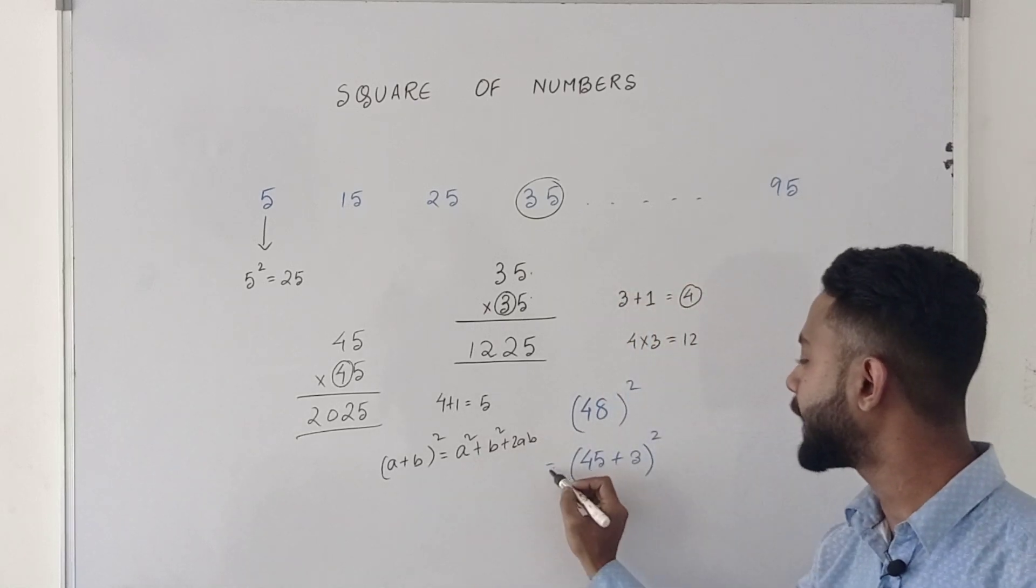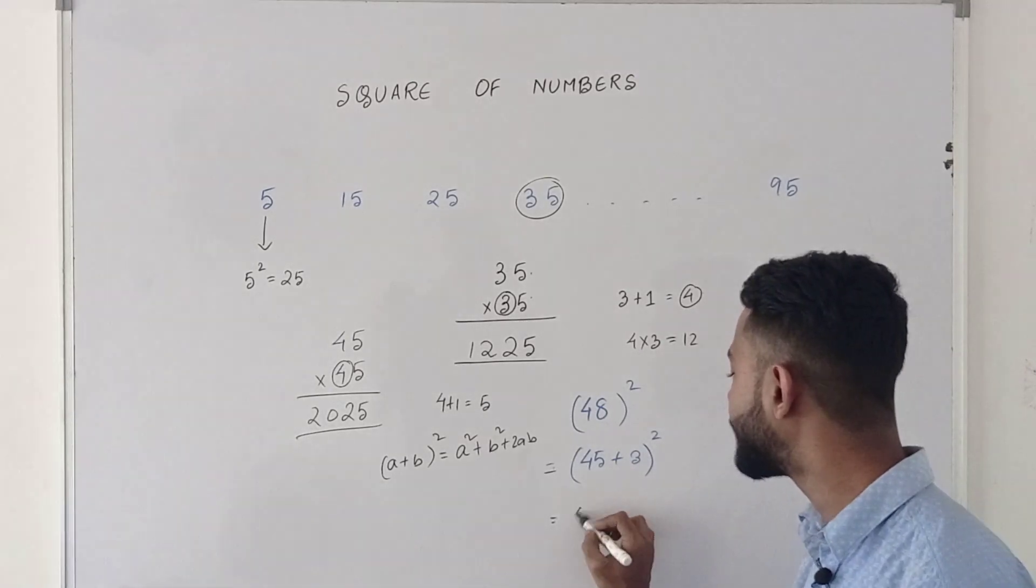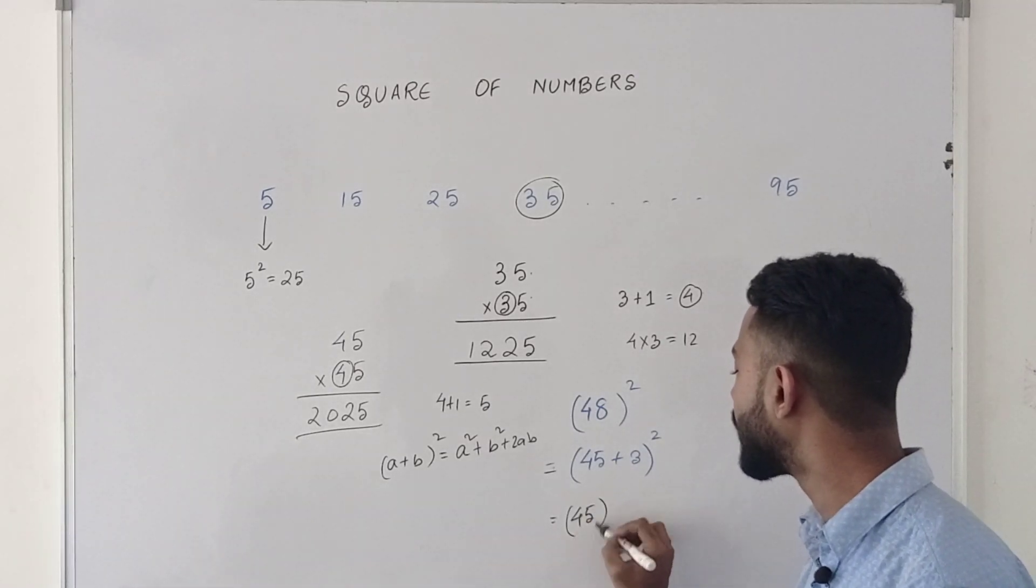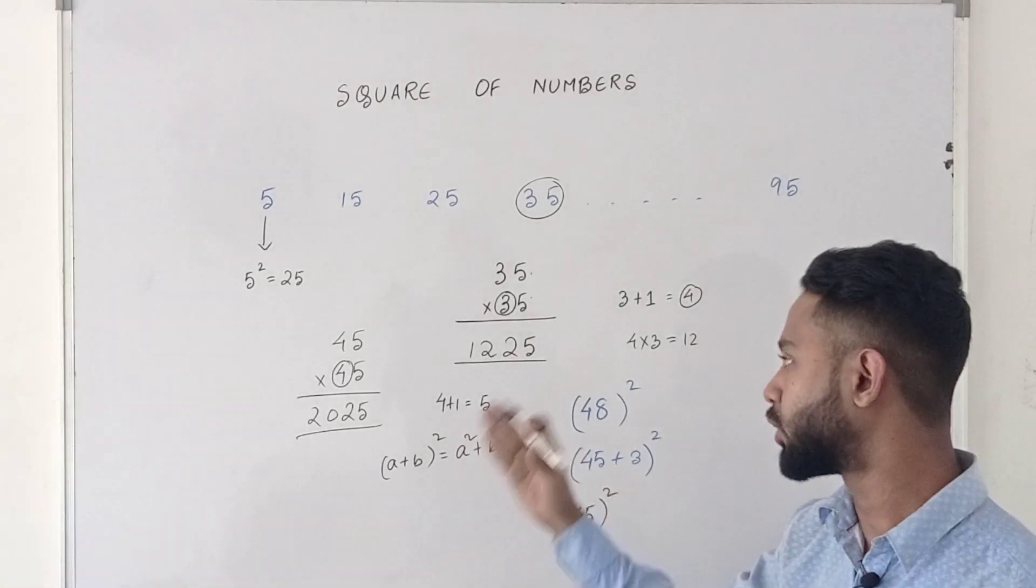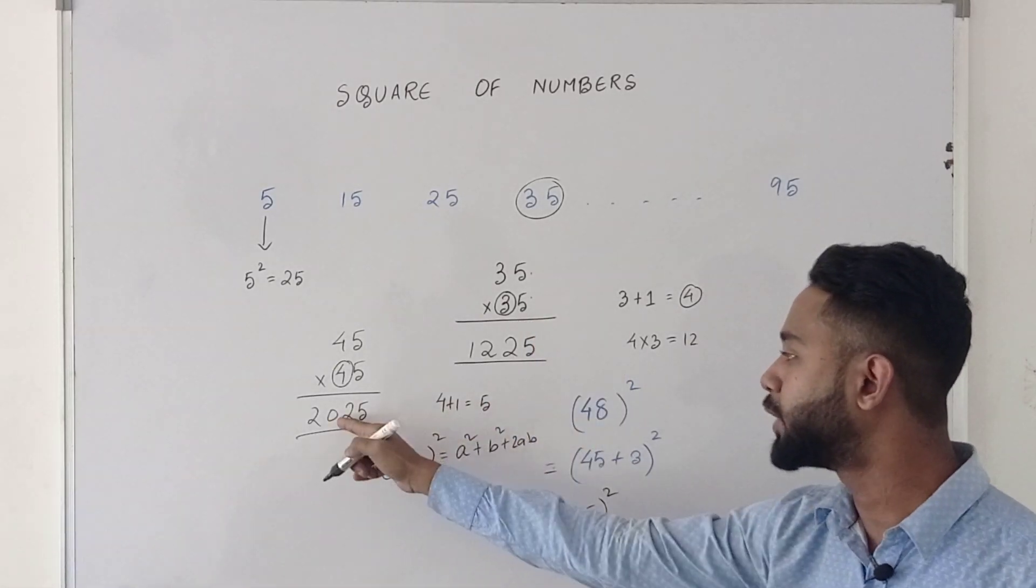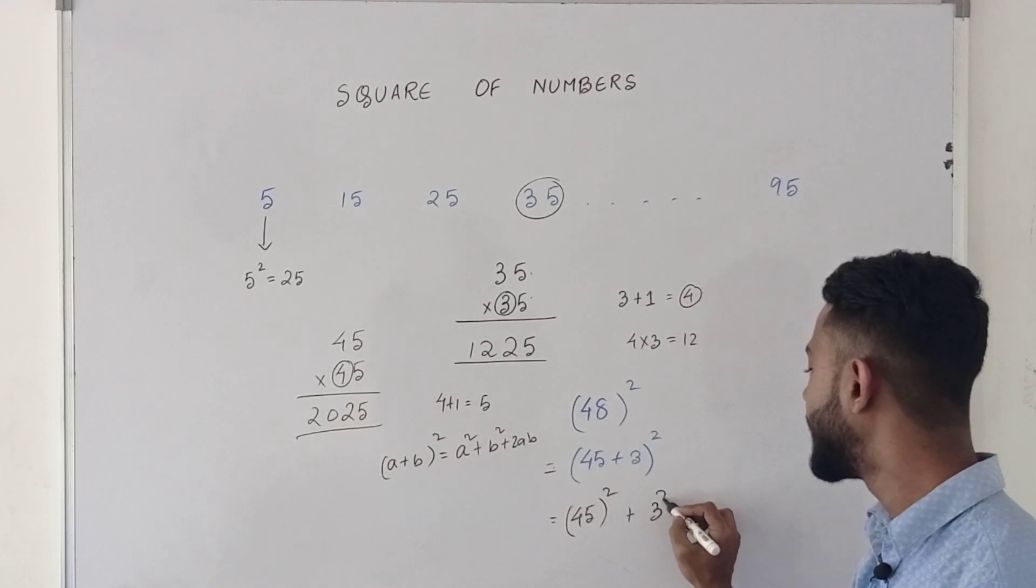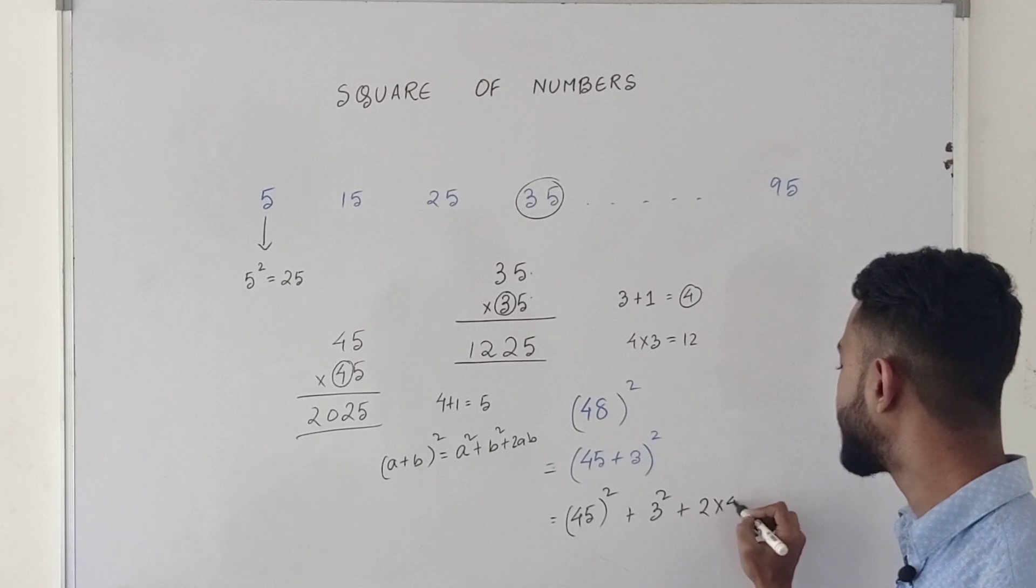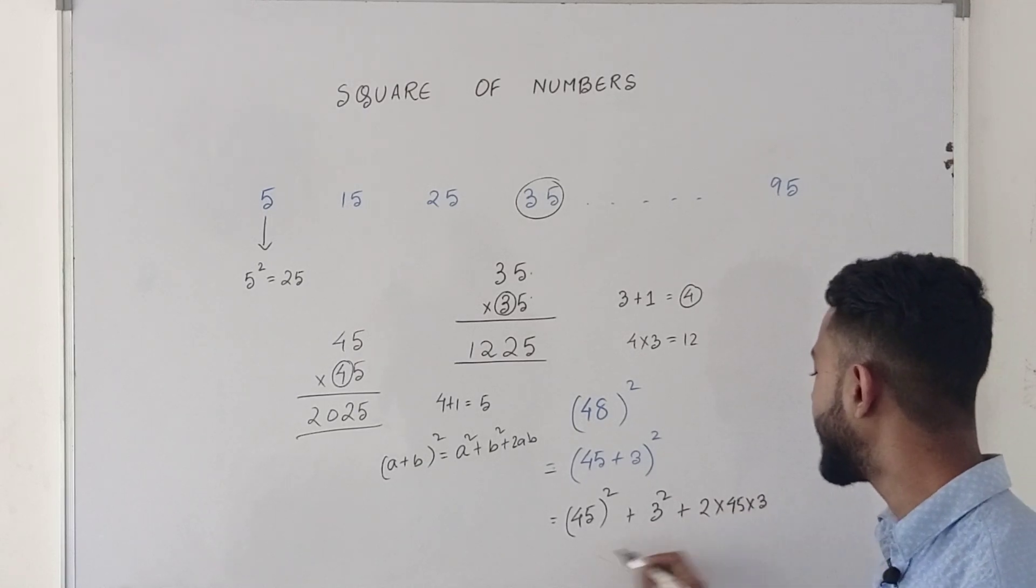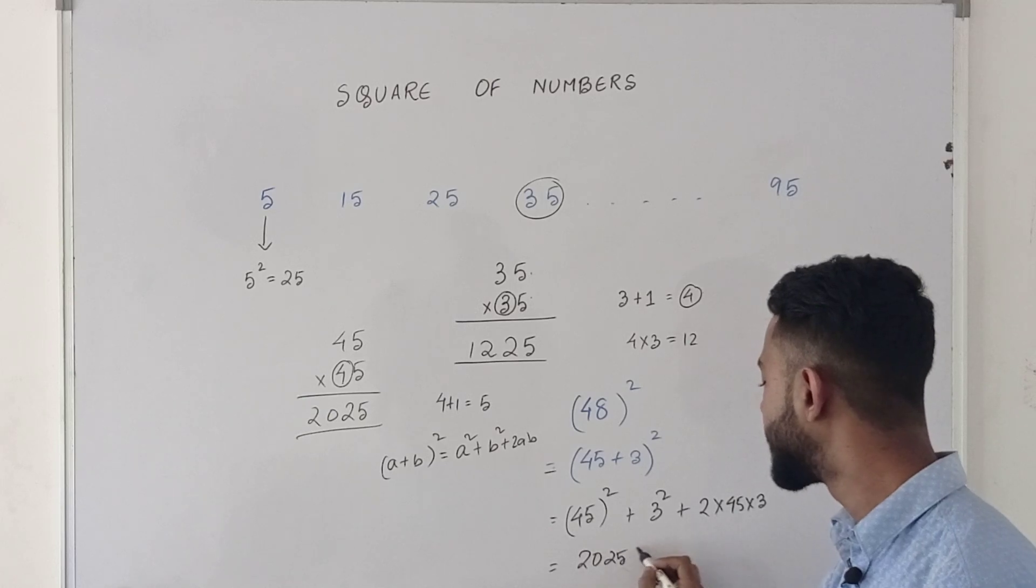Now using that formula, we can find out the squares. So how do I find the square? I find 45 square. The 45 square using the shortcut trick, I directly get 45 square which is 2025. Next will be 3 square plus 2 into 45 into 3. That will be 2025 plus 9 plus 2 into 45 into 3.